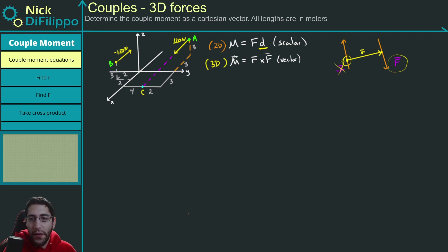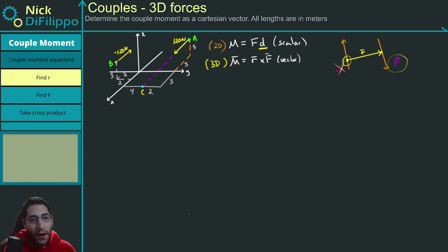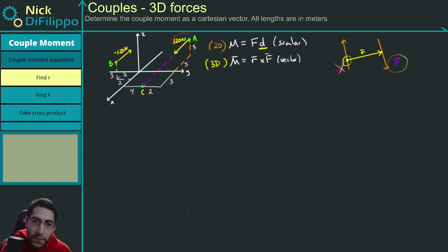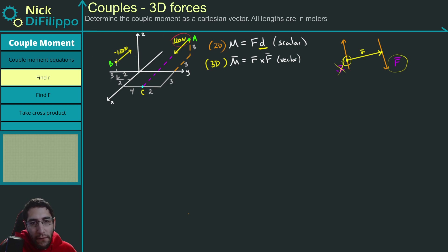Now that we know the equations, let's figure out where my R vector is for this problem. I'm going to use this 120 Newton force vector because I'll have more information about its orientation. So I want my R vector to point from point B to point A, and this is going to be R.